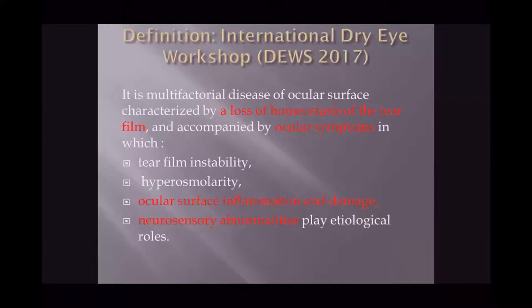According to the International Dry Eye Workshop 2017, ocular dryness is defined as a multifactorial disease of the ocular surface characterized by a loss of homeostasis and accompanied by ocular symptoms, in which tear film instability, hyperosmolarity, ocular surface inflammation, and neurosensory abnormality play etiological roles.